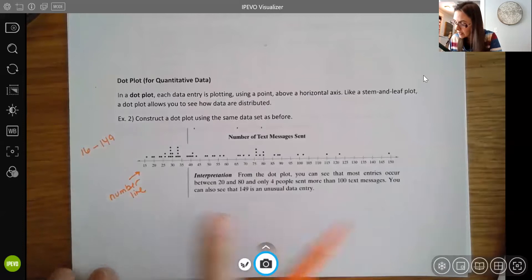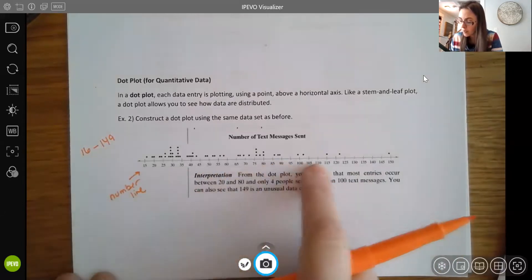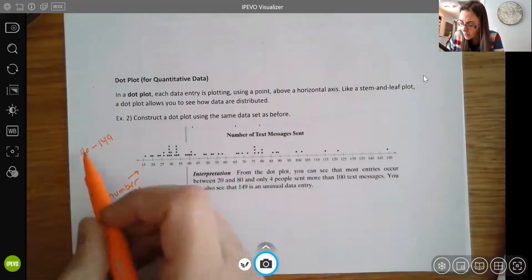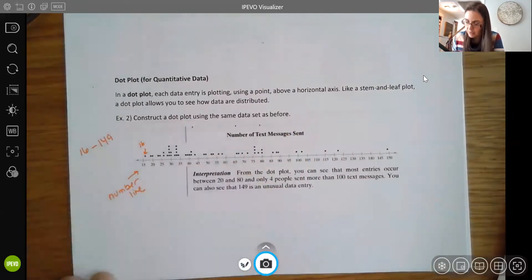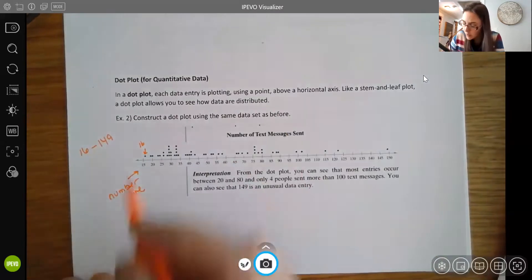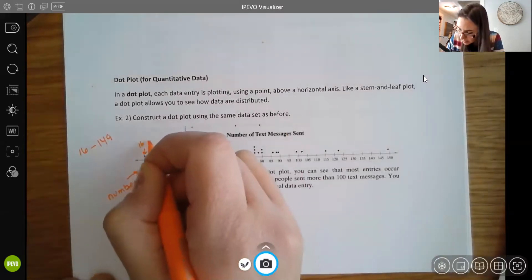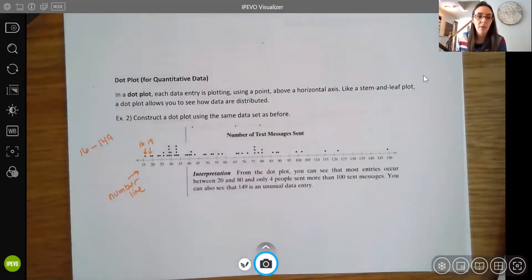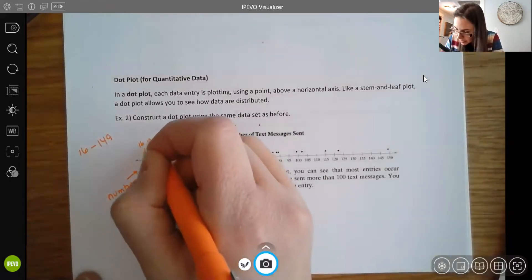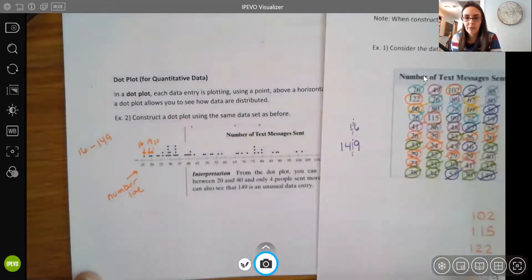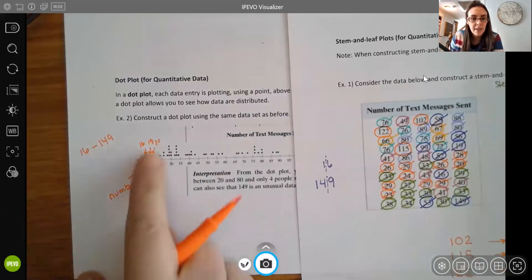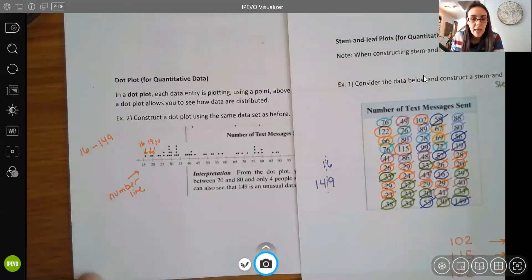So, for instance, we're just kind of estimating here, notice that we're counting by fives in our number line. So one of our values was 16. So you can see they put a point right here where 16 would be. And then we had another data point that was 19 and they put a point right there where the 19 would be. We had another data point that was 20. So I'm just going to look at my original data for a second here. And then we put a data point at the 20.